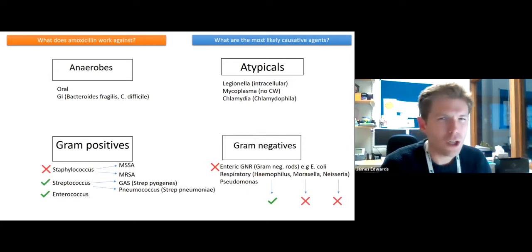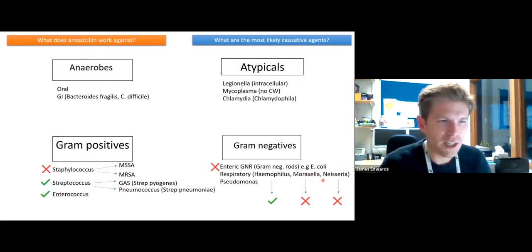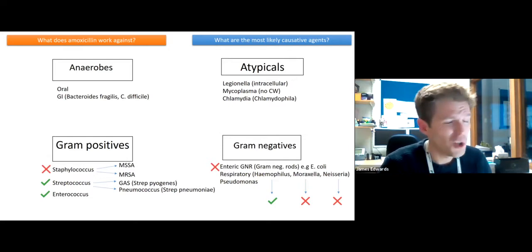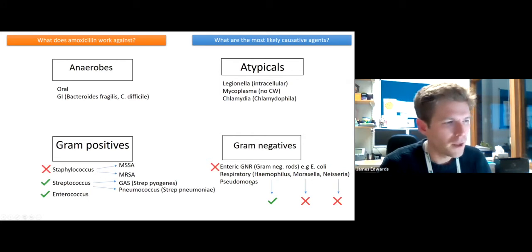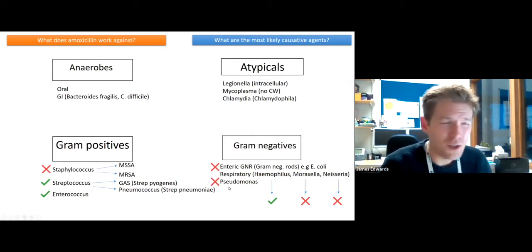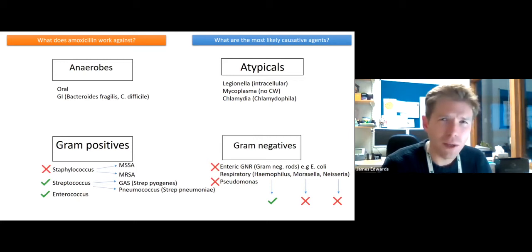However, it wouldn't be useful against Moraxella or Neisseria. Common sense applies here: the two medically important Neisseria species are gonorrhoeae and meningitidis, and this child clearly doesn't have gonorrhoea or meningitis, so covering them isn't necessary. Similarly, Pseudomonas can cause respiratory tract infections, but there's no reason to think this child has a Pseudomonas infection, so empirically you wouldn't need to cover it.